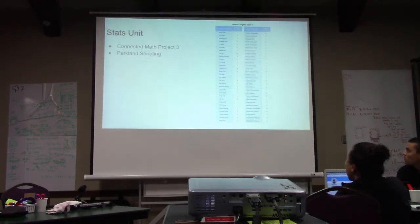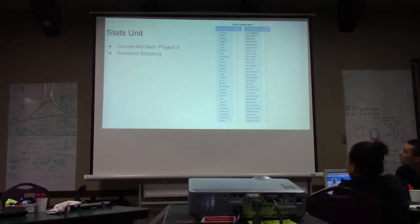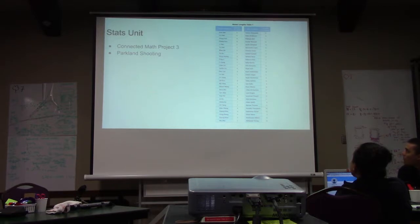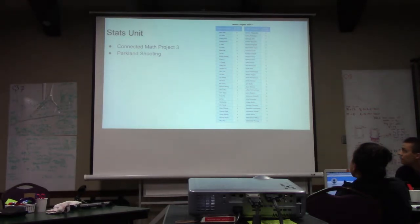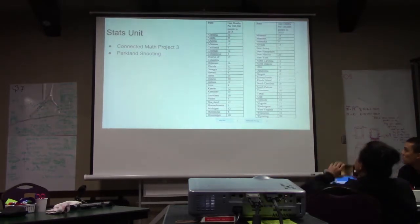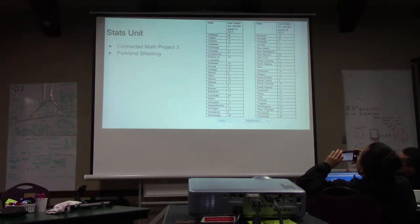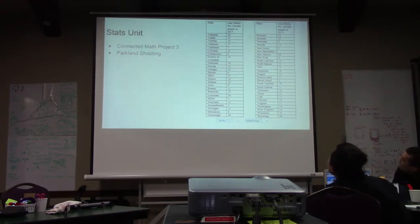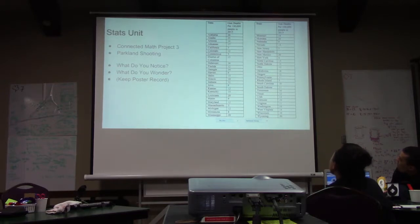Then we actually started our stats unit. I used Connected Math, and they taught stats, like some statistics, variability, measures of spread through the name lengths of Chinese and US students, which I thought was really boring. Also this was around the time of the Parkland shooting, my kids were talking about it but teachers weren't talking about it. So what I did is I replaced the data set. I used the curriculum but I swapped out the data set, and we looked at gun deaths per hundred thousand people per US state. I started off with the what do you notice, what do you wonder.